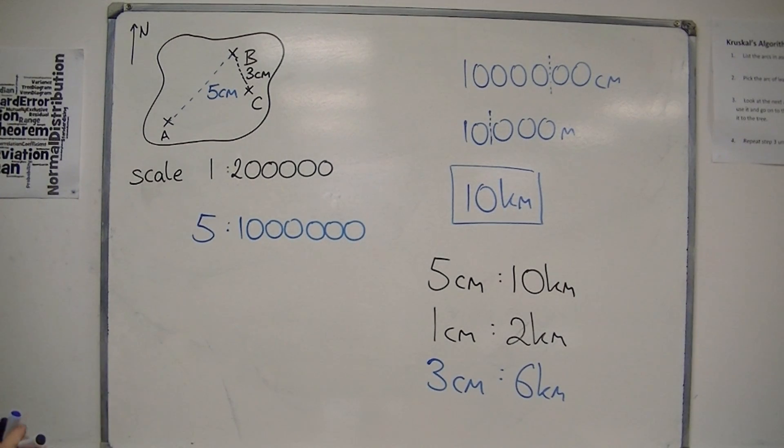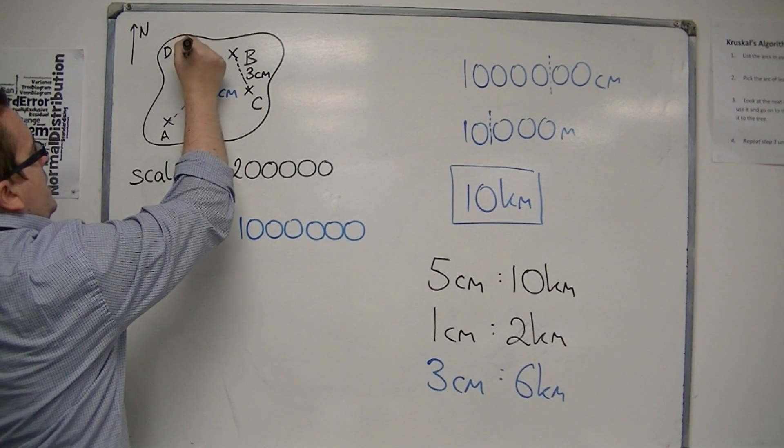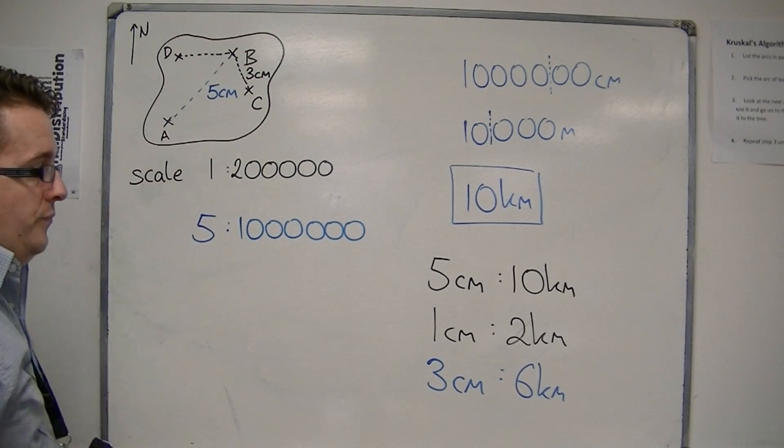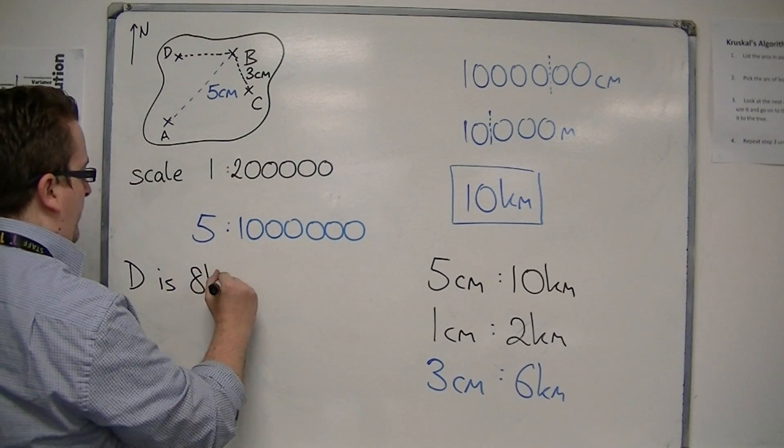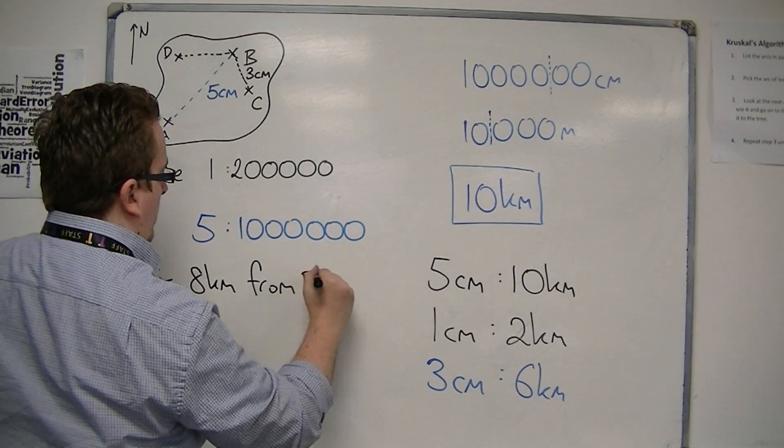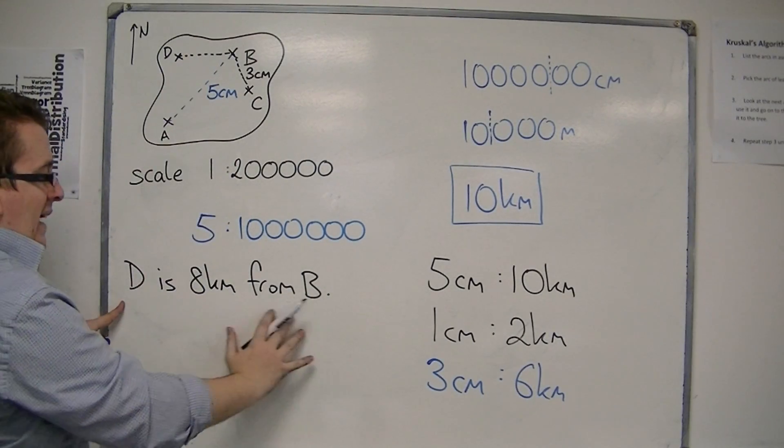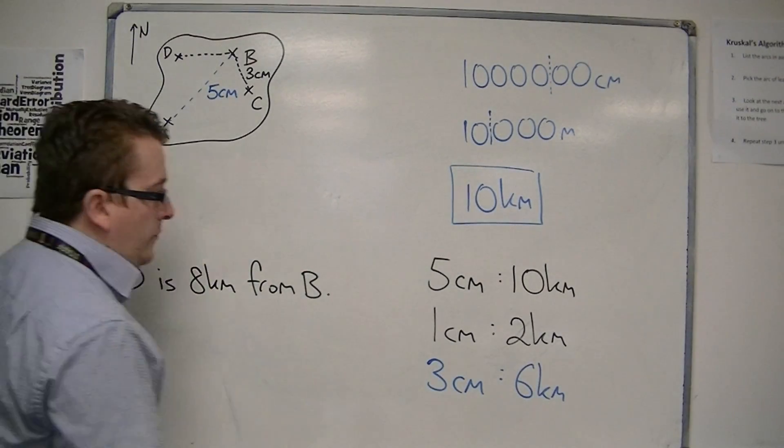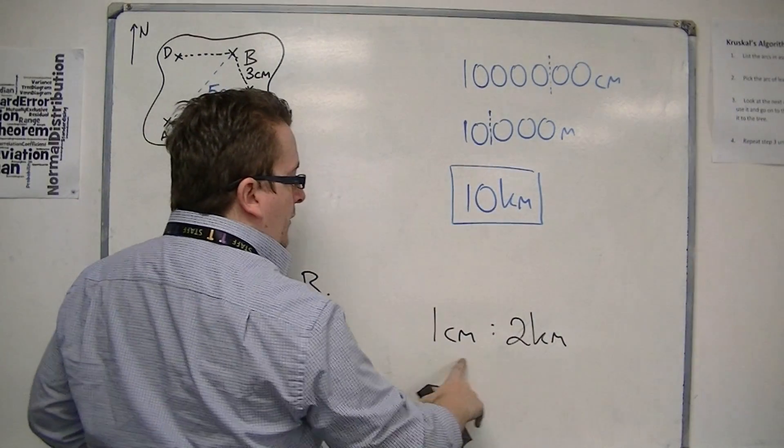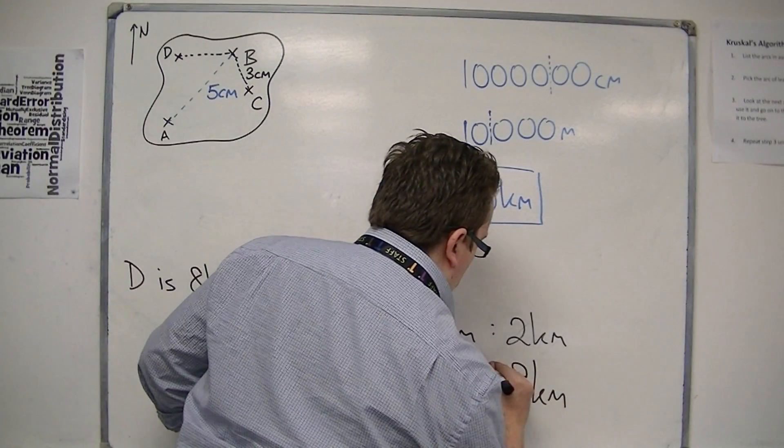Now let's say in another case we've got town D. Now I know that town D is eight kilometres away. So D is eight kilometres from B. So how far away should it be on the map? So I know that it's eight kilometres in reality, but how far should it be on the map? So I've got this scale, one centimetre to two kilometres.